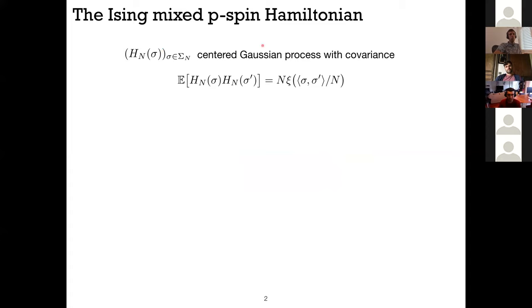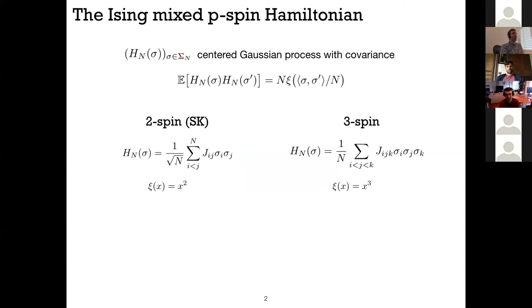We'll be interested in optimizing these things that are called spin glass Hamiltonians. So let me define it. Here we have a Hamiltonian which is a Gaussian process. By definition it's centered and it has a covariance that when evaluated at two points sigma and sigma prime depends only on the inner products between those two points.